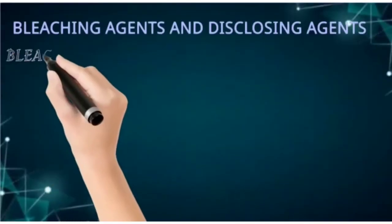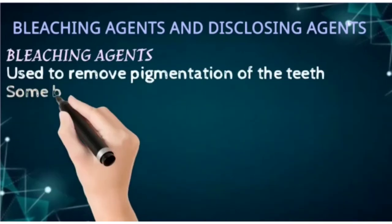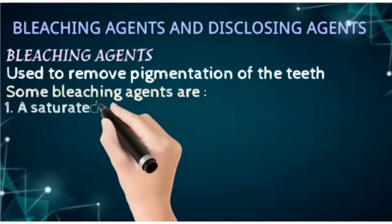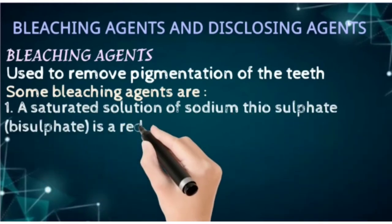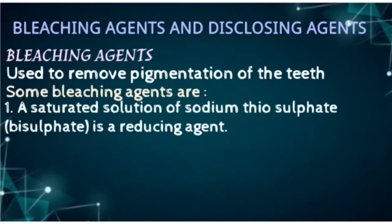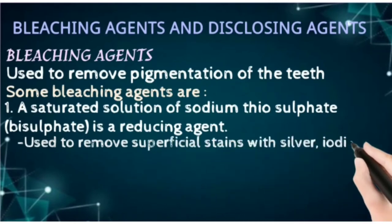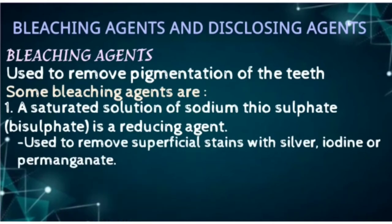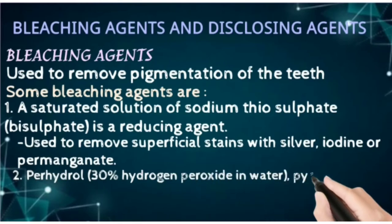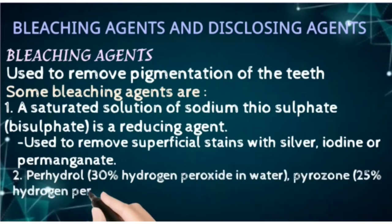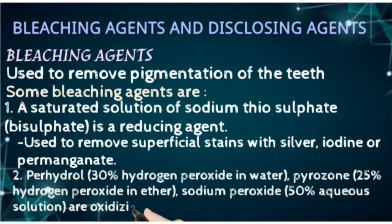Bleaching agents and disclosing agents. First, let us talk about the bleaching agents. Bleaching agents are used to remove pigmentation of the teeth. The bleaching agents we use include: saturated solution of sodium thiosulphate, which is used to remove superficial stains with silver, iodine, or permanganate. Then perhydrol, which is 30% hydrogen peroxide in water. Pyrozone is also there — 25% hydrogen peroxide in ether. Then sodium peroxide, which is a 50% aqueous solution. These are all oxidizing agents.